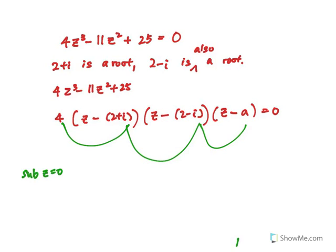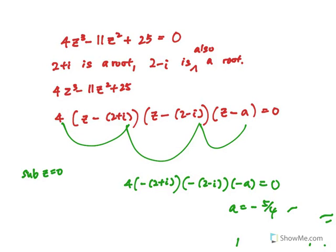So you can see I have 4 multiplied by negative 2 plus i, multiplied by negative 2 minus i, multiplied by negative a, it will give me 25. So actually, a is equal to negative 5 over 4.